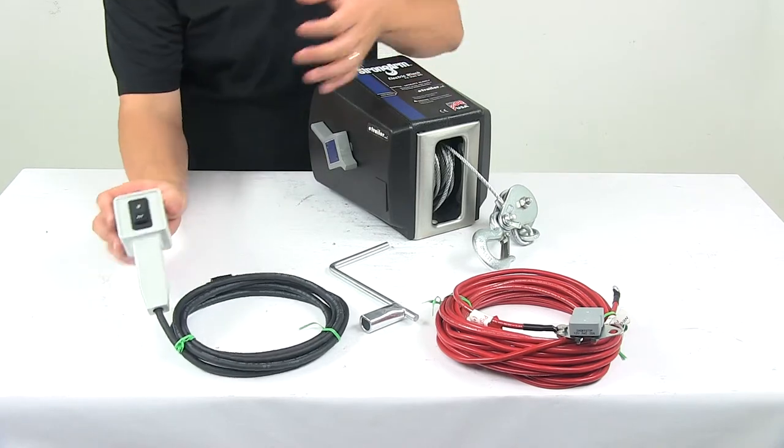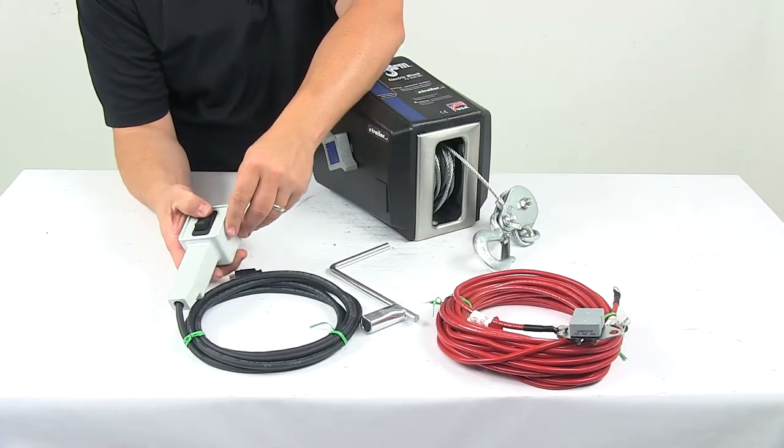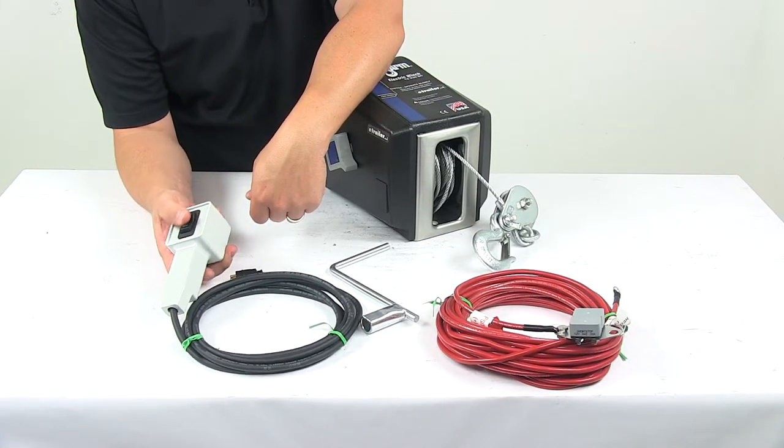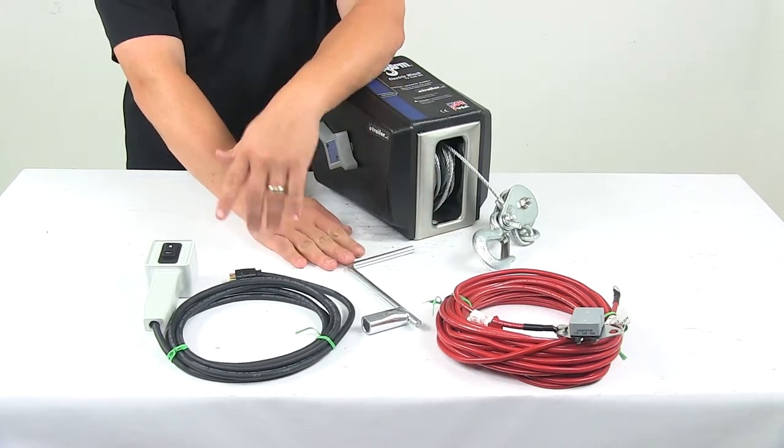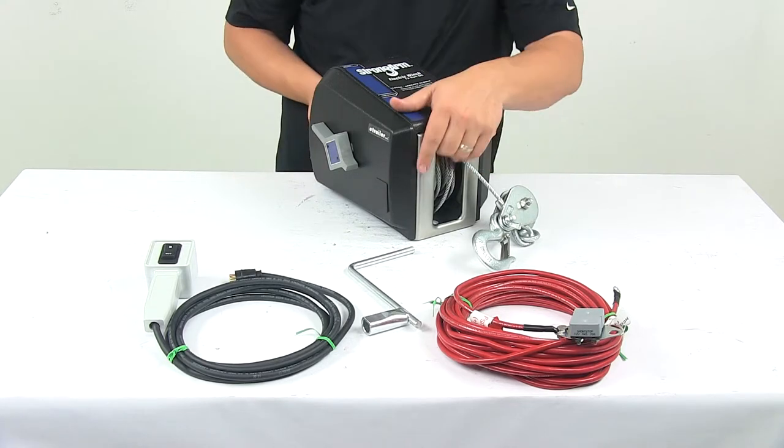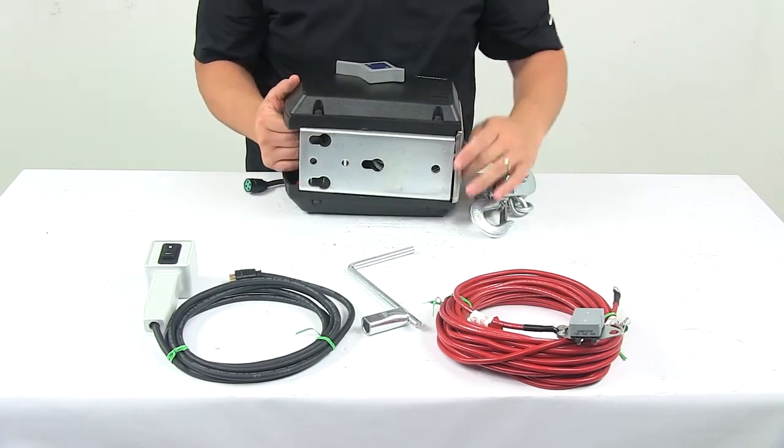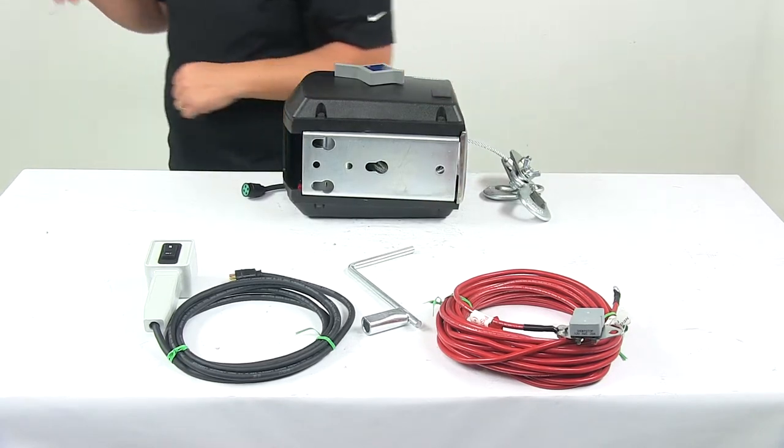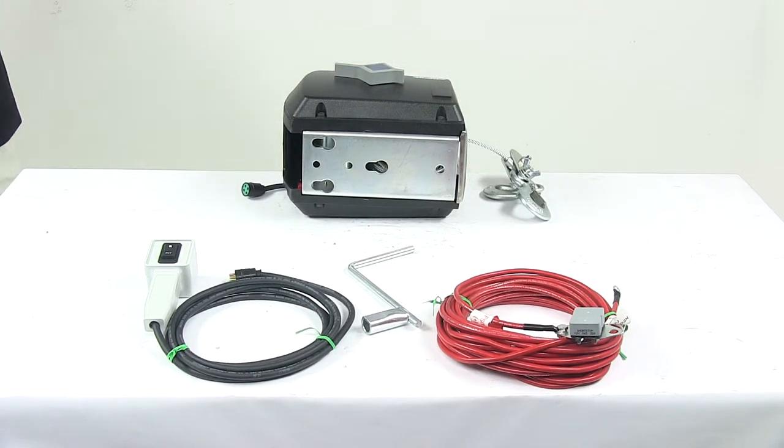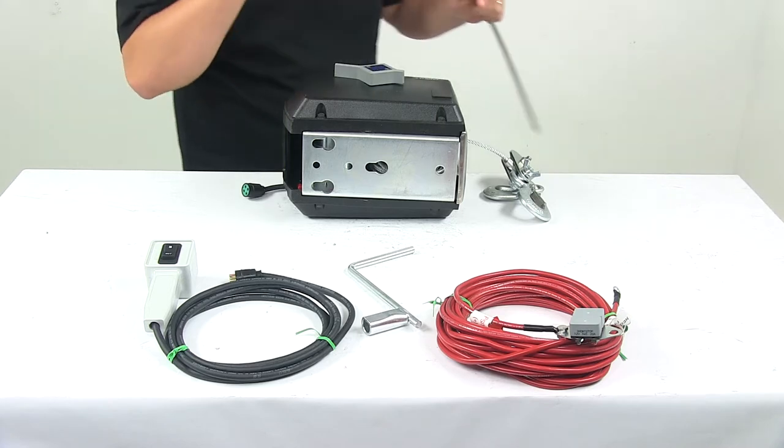It's a really nice winch. Again, you've got the handheld remote right here, allows you to control the in and out functions from a safe distance. You've got your wiring harness, fuse protected. Really, the last thing I want to go over is just the measurements here of the unit and the base, so we're going to take a look at the mounting plate.